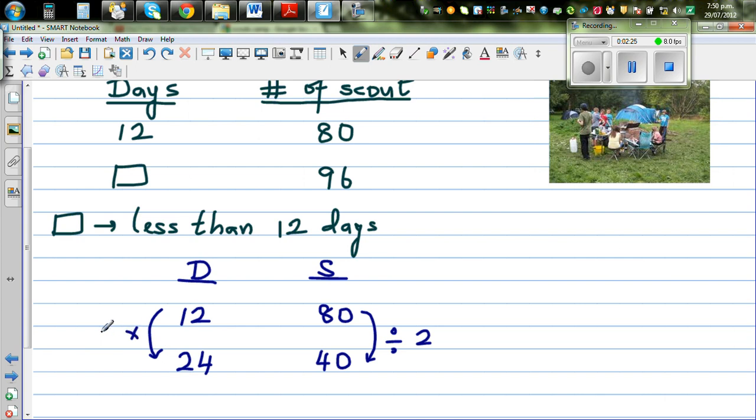So if this is, and that's why it's called an inverse proportion, this is divided by 2. If this is becoming half, this will become double.